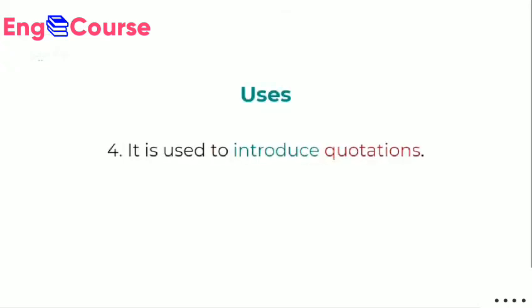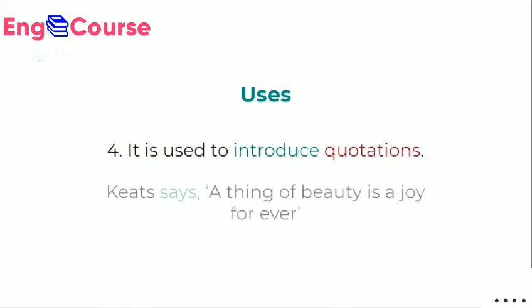Another use: present indefinite is used to introduce quotations — to start someone's quoted words. For example, to introduce a quotation by John Keats, the English poet, you use present indefinite: 'Keats says...' Here S is added to 'say' because the subject is singular. S or ES is always added with the first form of the verb in present indefinite. So here we used present indefinite to introduce a quotation: 'Keats says, a thing of beauty is a joy forever.'